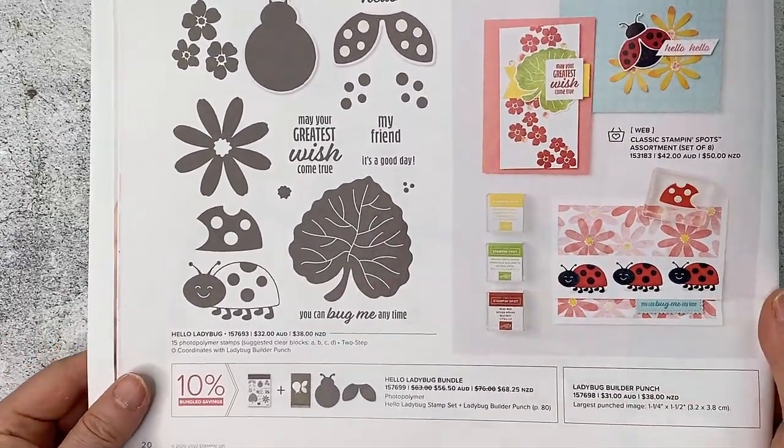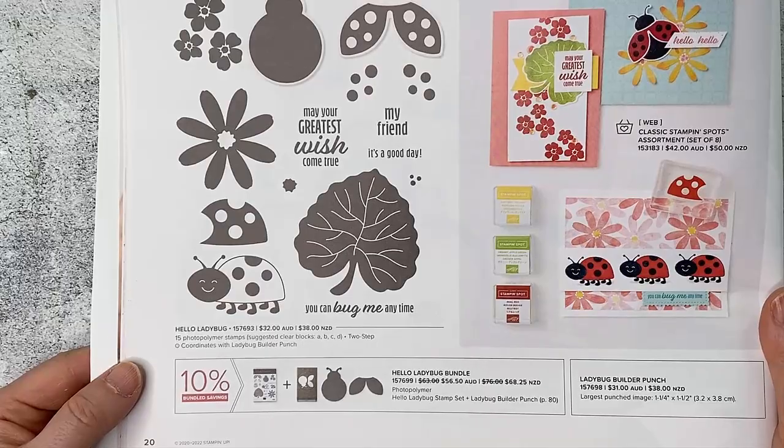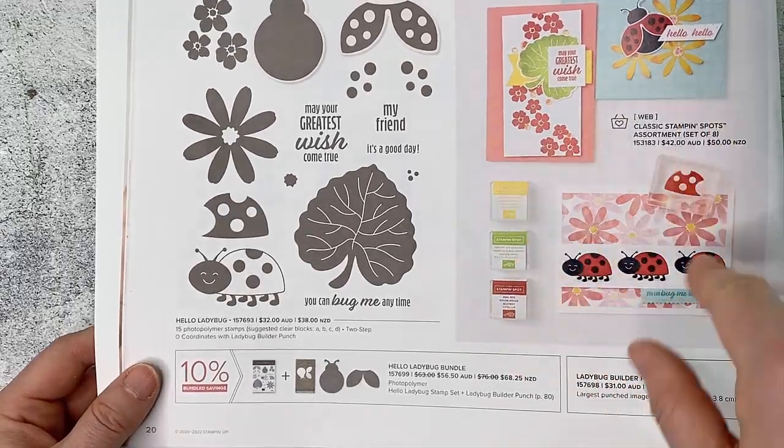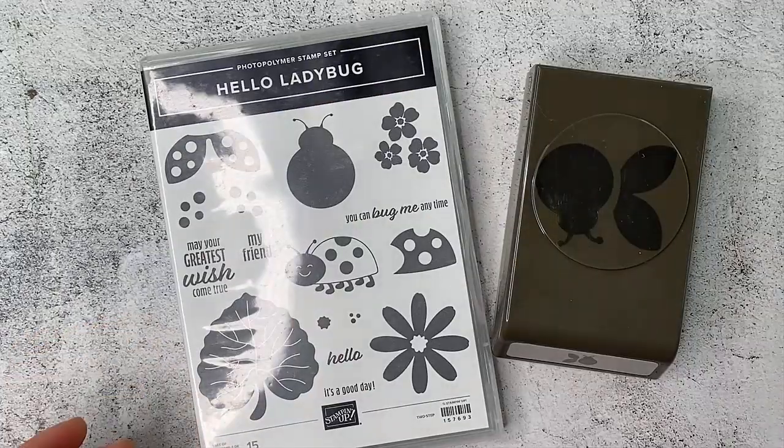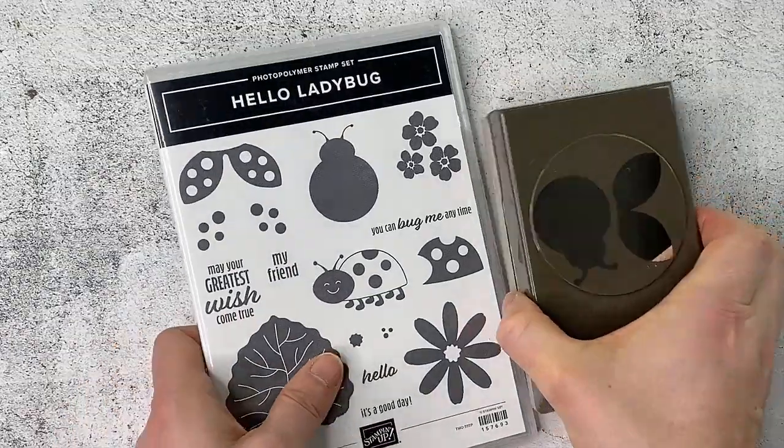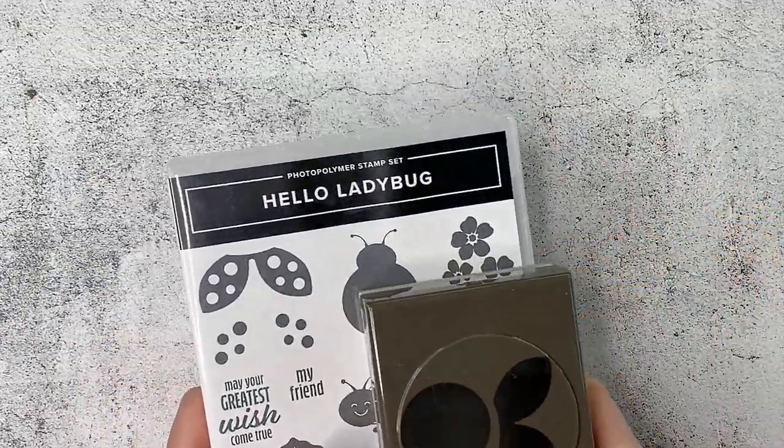These are found on page 20 of the new mini catalog and they've got some great samples here. Today's project is inspired by the sample that's in the back of the book but I have adjusted it to fit the little treat boxes.